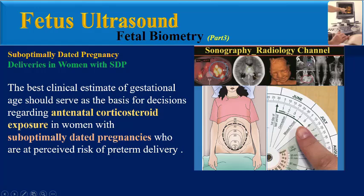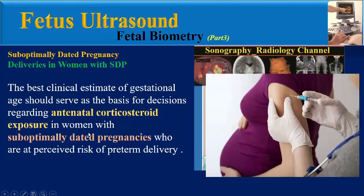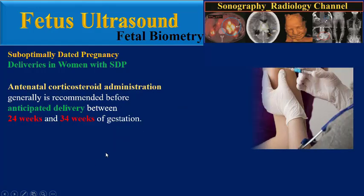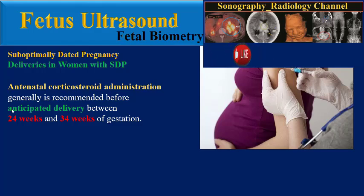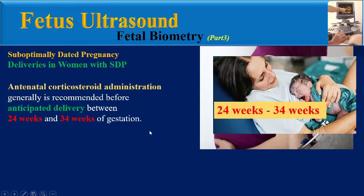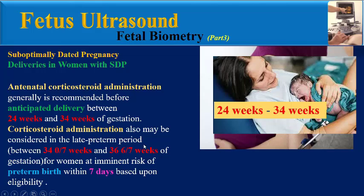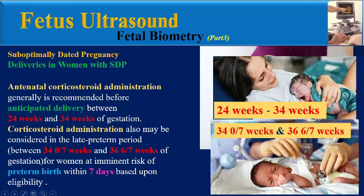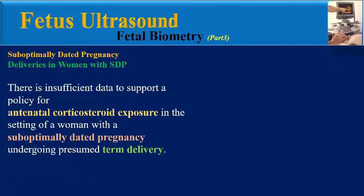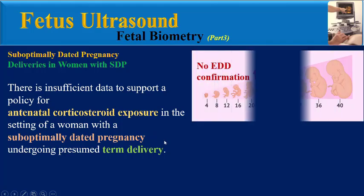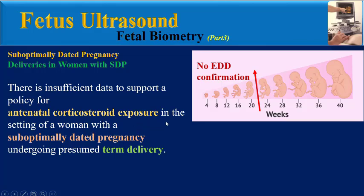Indicated preterm deliveries in women with sub-optimally dated pregnancies should be based on the best clinical estimate of gestational age. The best clinical estimate of gestational age should serve as the basis for decisions regarding antenatal corticosteroid exposure in women with sub-optimally dated pregnancies who are at perceived risk of preterm delivery. Antenatal corticosteroid administration is generally recommended before anticipated delivery between 24 and 34 weeks of gestation, and may also be considered in the late preterm period between 34 and 36 weeks for women at imminent risk of preterm birth within seven days.